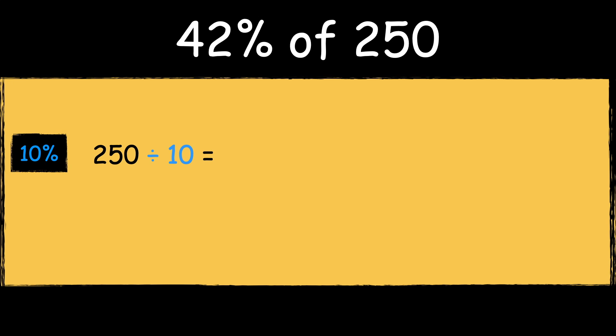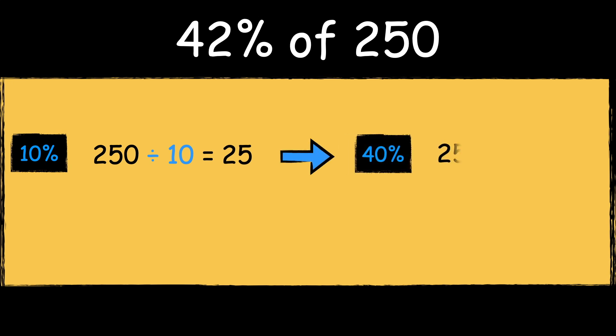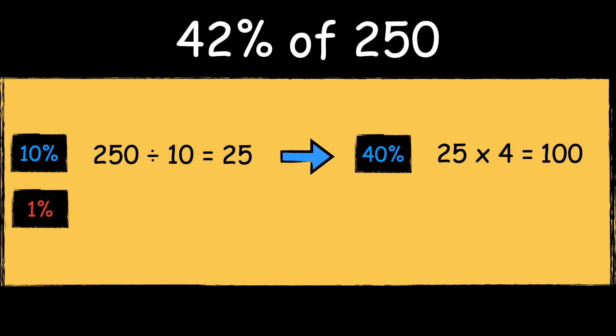Here's the next example: 42% of 250. First we work out 10% of the number by dividing it by 10. 250 divided by 10 equals 25. We can then multiply the answer by 4 to find 40%. 25 times 4 equals 100.